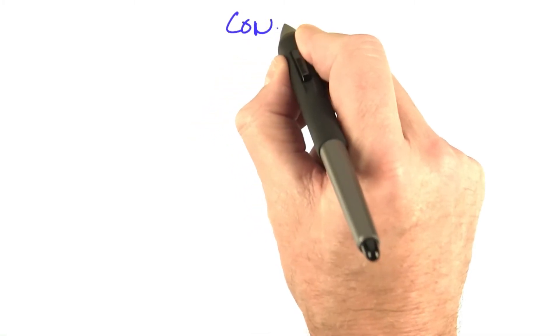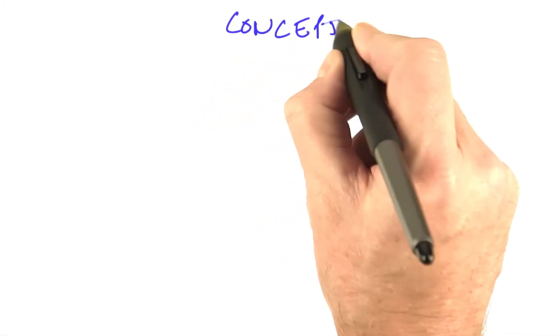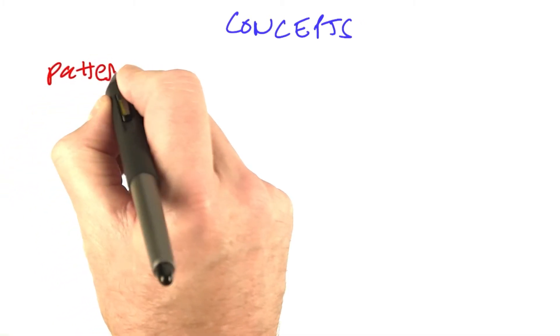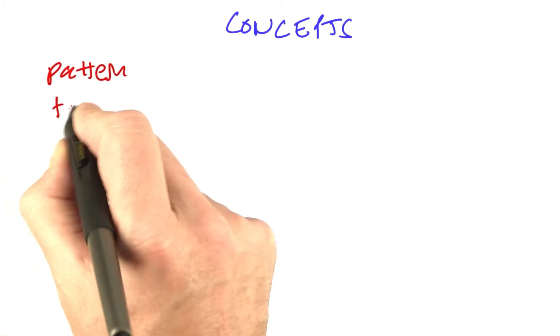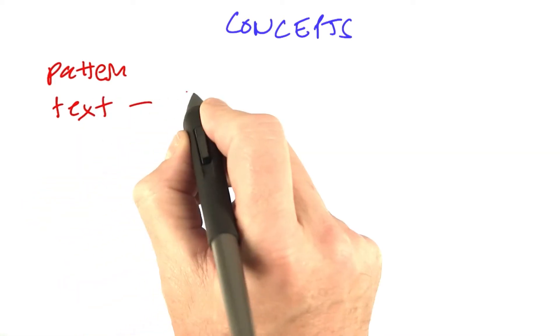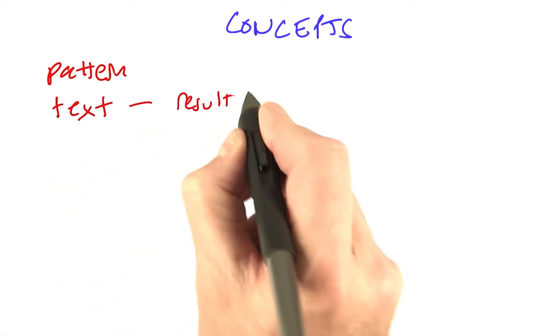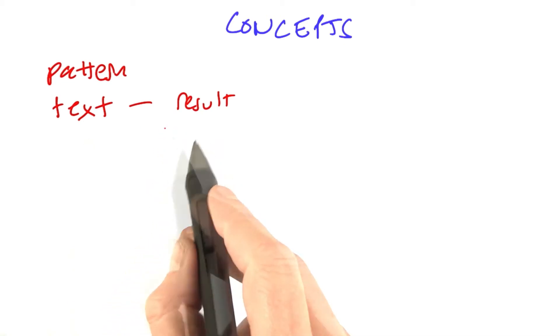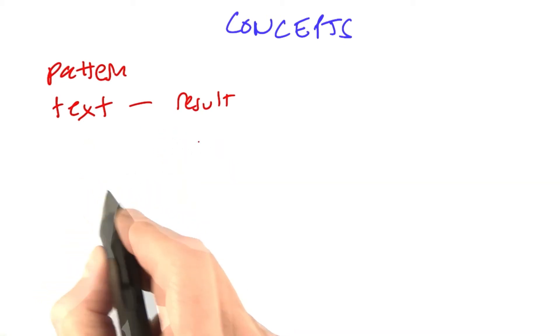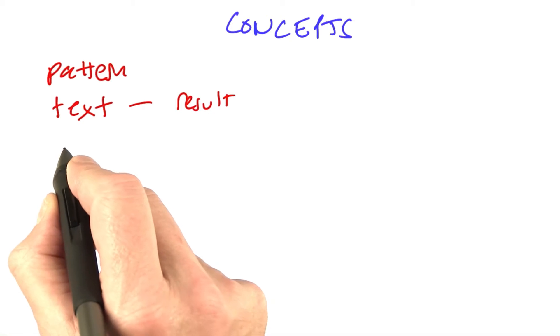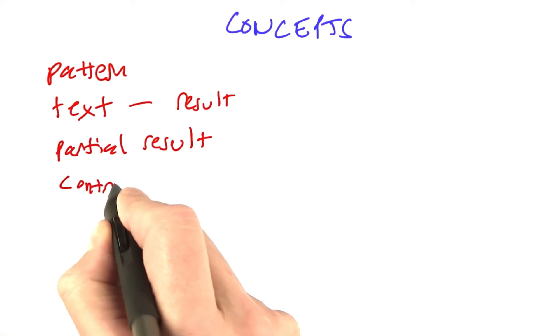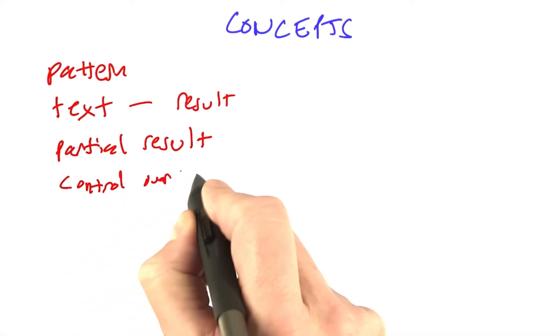I always like to start out with an inventory of the concepts that are going to be used. So far we have the notion of a pattern or a regular expression, of a text to match against, of a result which will also be a string of some kind, and it doesn't seem like there's all that many more concepts. One thing that it looks like we'll need is some notion of a partial result and some notion of control over the iteration.